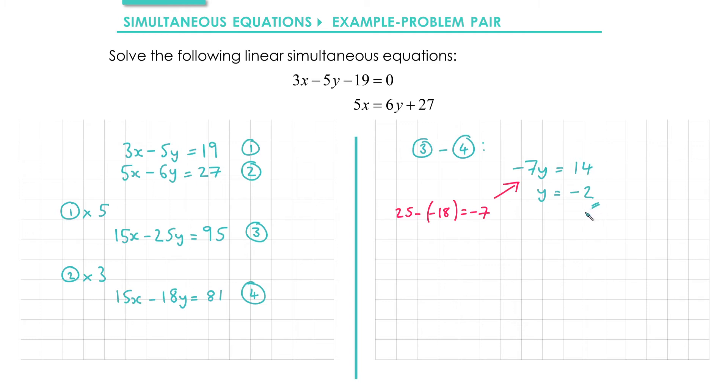Now that I've found my value for y, I can find the value of x by substituting y equals minus 2 back into either of the original equations. I'm going to choose to substitute into 1, but you'd get the same answer if you substituted into 2.